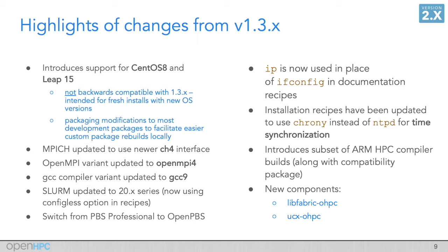We've made a number of software updates. For OpenMPI, we're now building against the OpenMPI 4 series. With the GCC compiler, we're at GCC 9. We've updated our Slurm builds to use the latest 20.x series. And we've actually updated our example installation recipes to